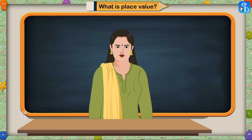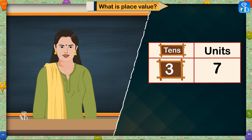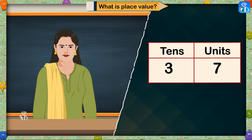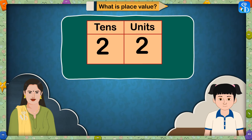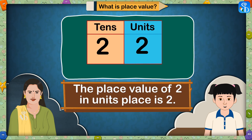Well done, children! You have guessed the place value of the underlined digits correctly. So far you have told me the place value of a single digit in a number. Now you have to tell me the place values of both the digits in the given numbers. Tell me the place values of both the 2s in the number 22. The place value of 2 in tens place is 20 and the place value of 2 in units place is 2.